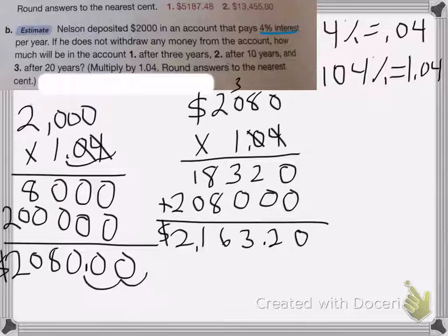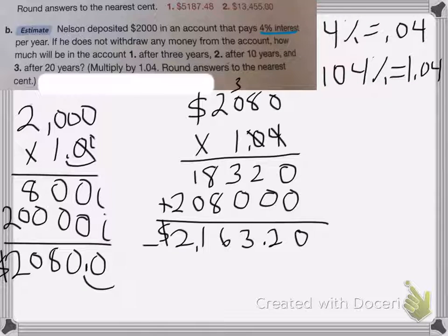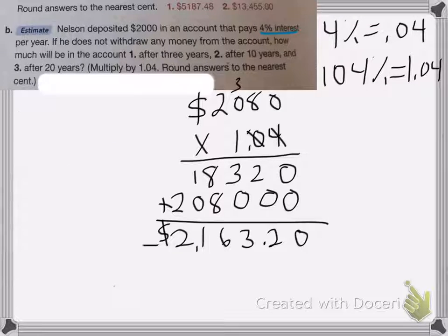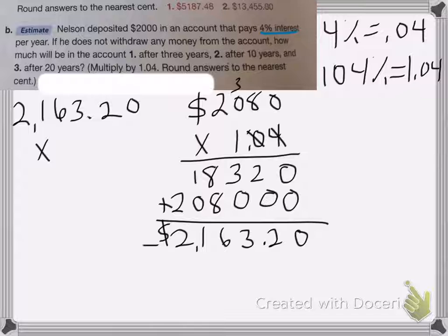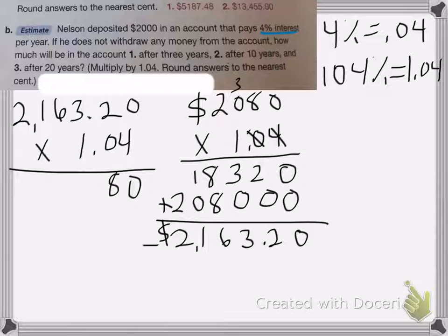So then we're going to do it for the last year. I'm going to have a little bit more room, so I'm going to go ahead and erase this one. So then we have $2,163.20, and I'm going to multiply that by 1.04.